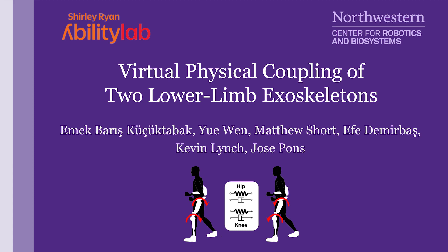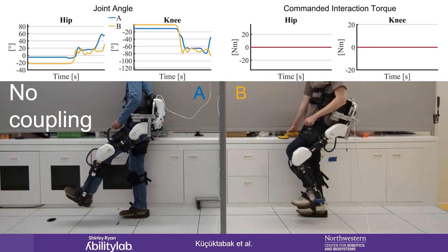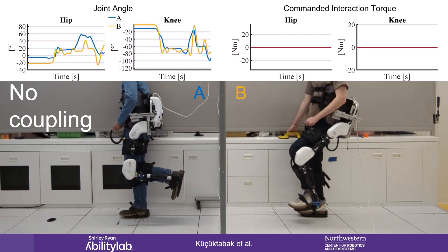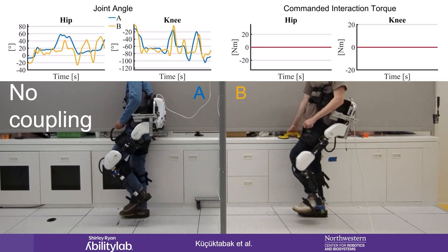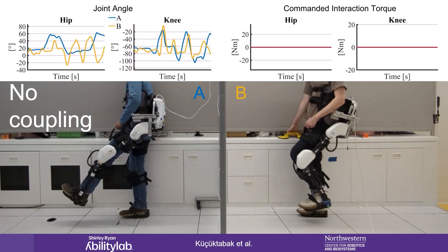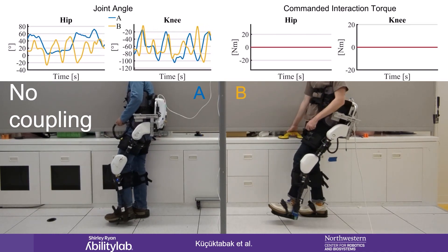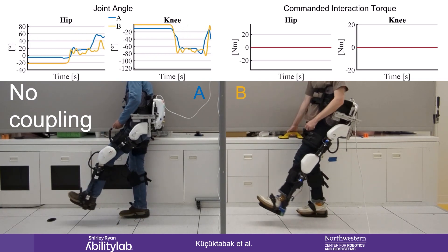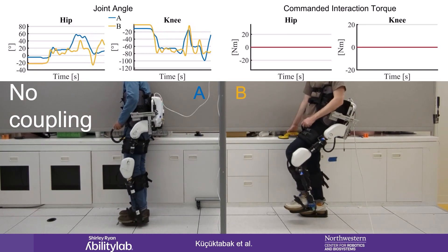This video demonstrates the virtual physical coupling of two lower limb exoskeletons. Here you can see two users freely moving without any interaction between their exoskeletons. The plots at the top left show their hip and knee angles, where blue is user A and orange is user B. For each user, the commanded interaction torques are zero at the hip and knee, as shown in the top right figure. In this case, there is no physical communication or synchronization between the users.